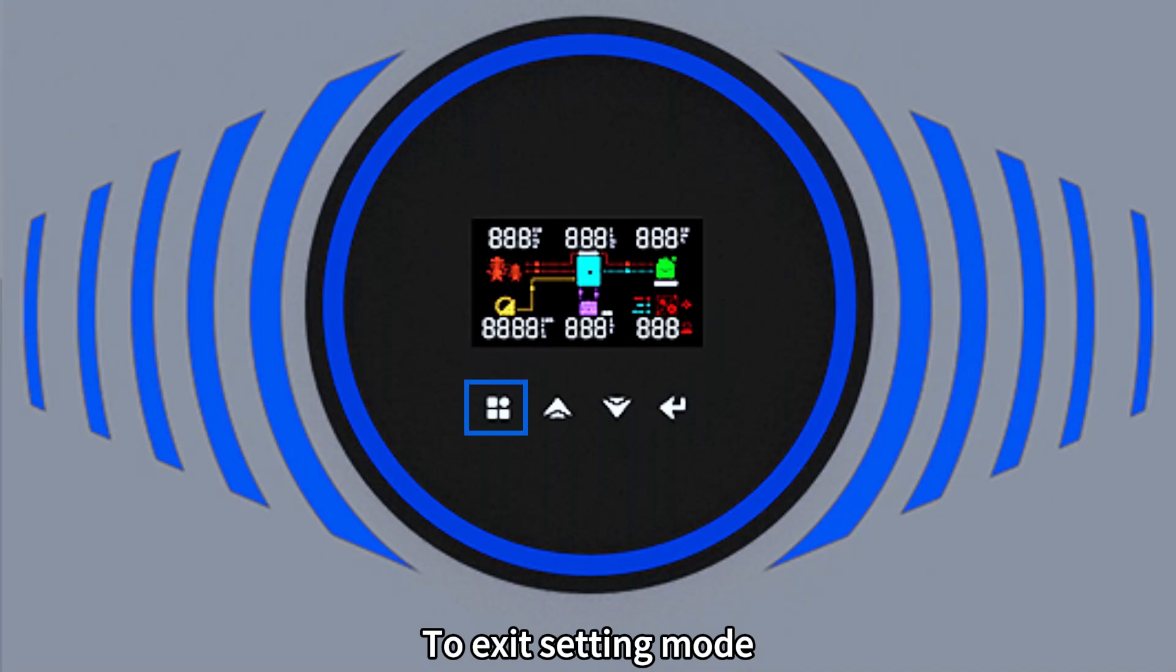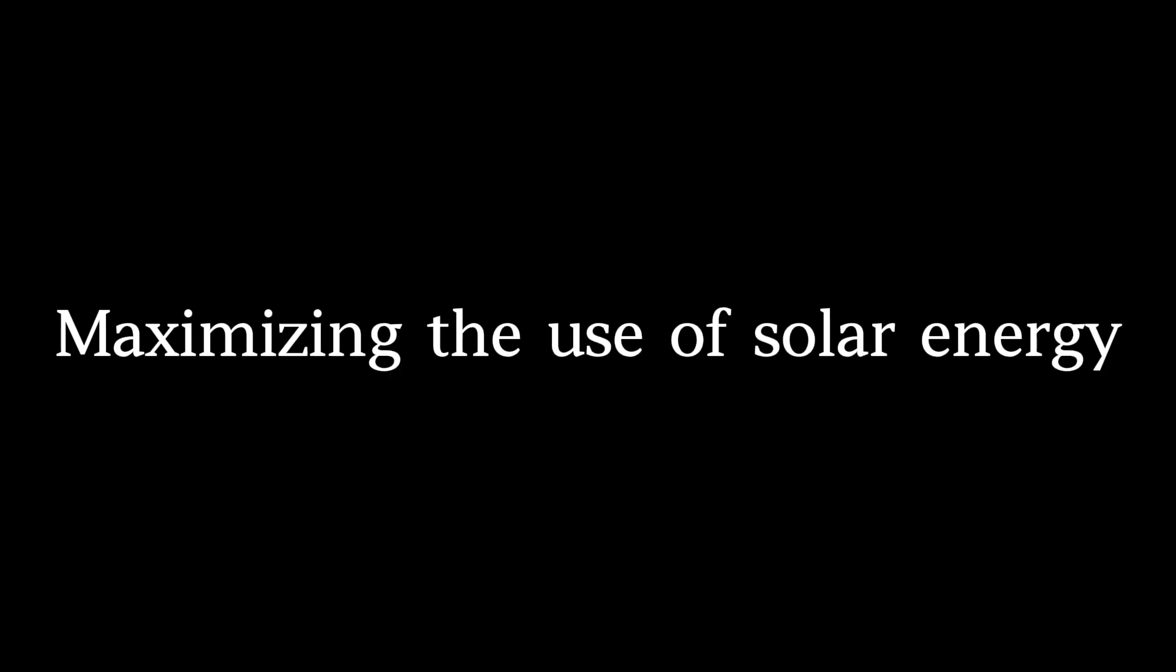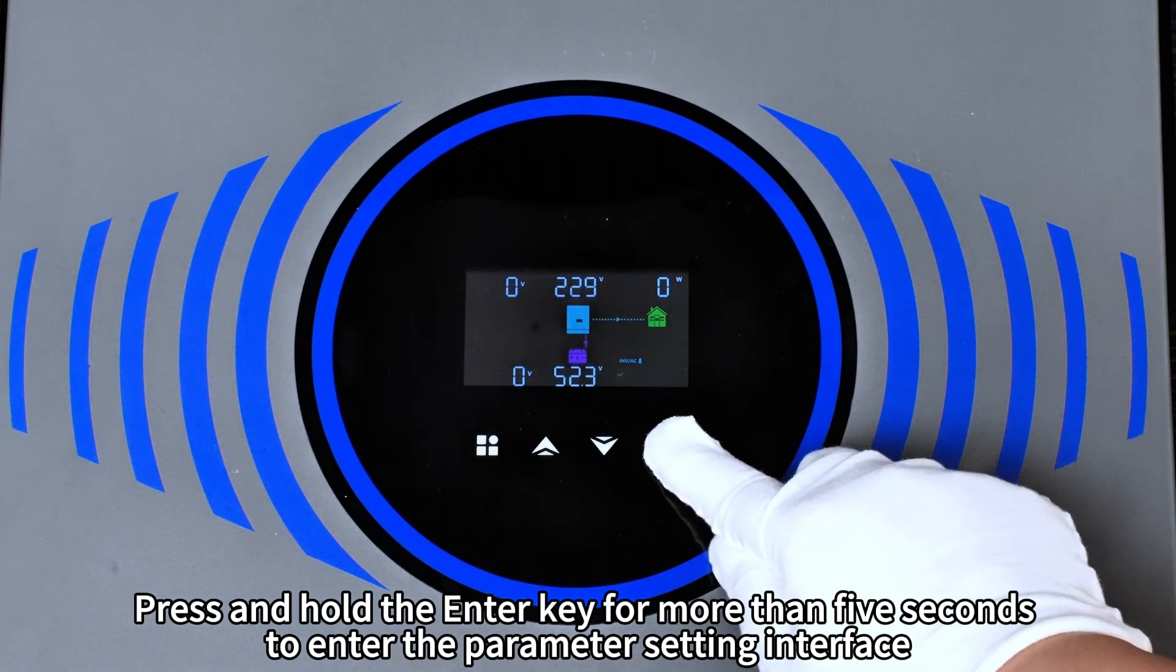To exit setting mode, to go to previous selection, to go to next selection, to confirm the selection in setting mode or enter setting mode, press and hold the enter key for more than 5 seconds to enter the parameter setting interface.